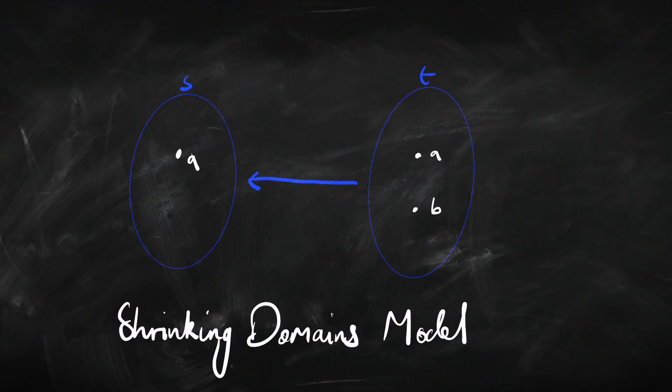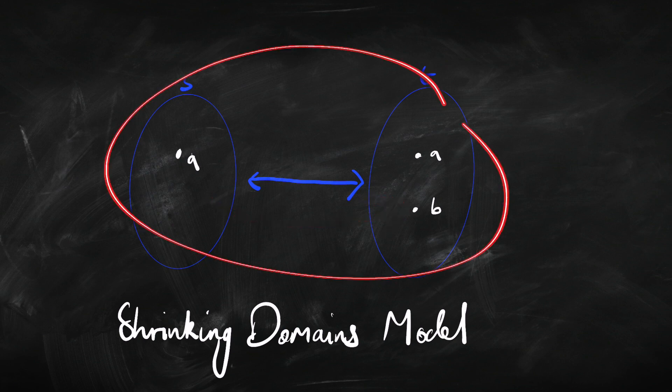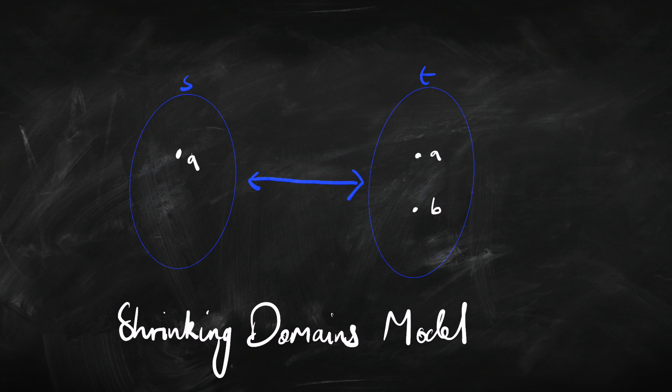There is one link, and that is when we're looking at a symmetrical accessibility relation. Suppose we've got a shrinking domains model and it's also a symmetrical accessibility relation, so this arrow has to be a two-way arrow. Then if it's going to be shrinking from there to there, it's also got to be shrinking from there to there — which means it would no longer be a shrinking domains model, because it doesn't shrink going the other way. Another way of putting that: to have a shrinking domains model with a symmetrical accessibility relation, it's also got to be a nested domains model. Similarly, if you've got a nested model and it's a symmetrical accessibility relation, it's also got to be a shrinking domains model.